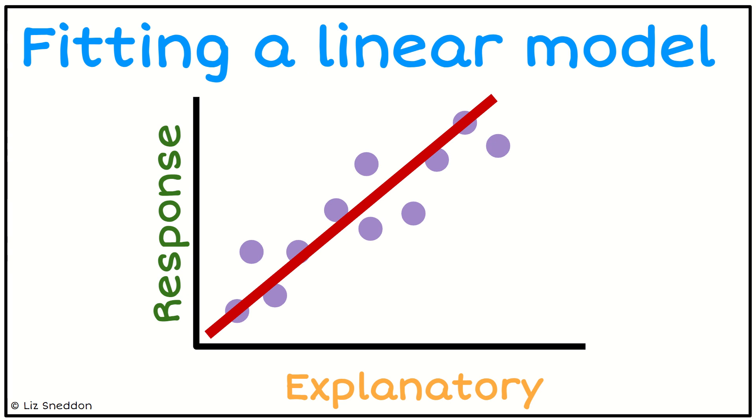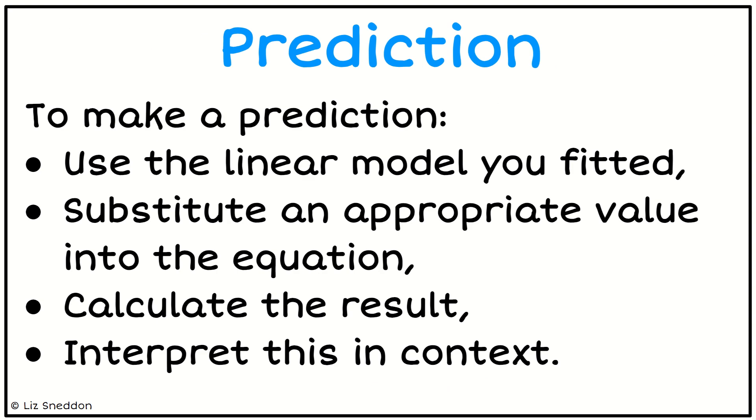Once we have that linear model, then we're going to go ahead and make some predictions. To make the prediction, we need to use that linear model, we need to substitute an appropriate value into the equation. You've got to look at what range of data you have and choose a value within that range, then calculate the result and interpret that in context.